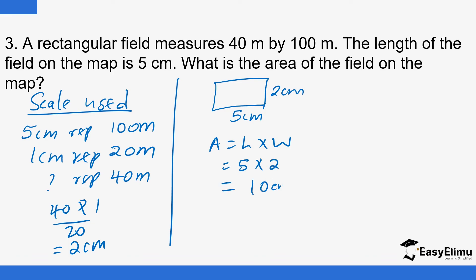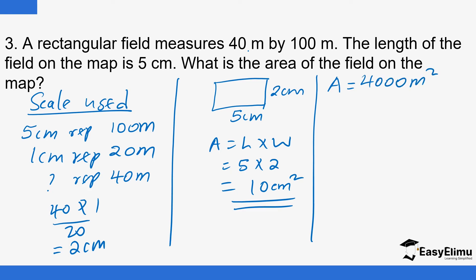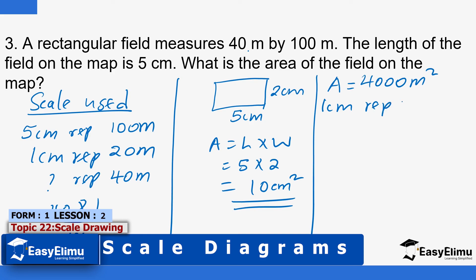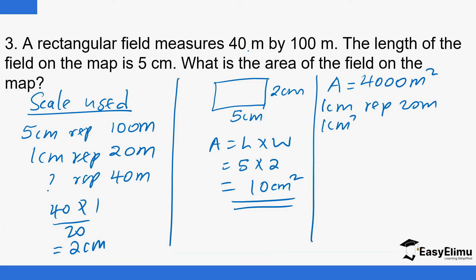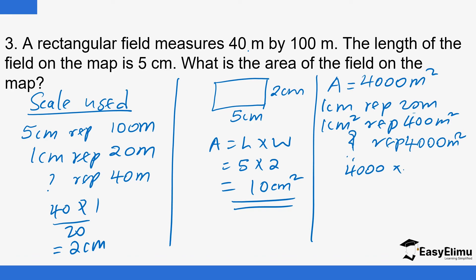The area is 5 times 2, which is 10 square centimeters. To verify: the actual area is 100 by 40, which is 4,000 square meters. Using the scale — 1 centimeter represents 20 meters — squaring both sides gives 1 square centimeter represents 400 square meters. So 4,000 square meters divided by 400 gives 10 square centimeters. Either approach gives the same answer.